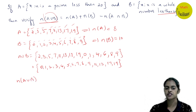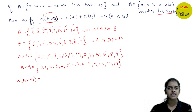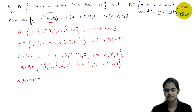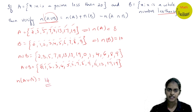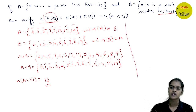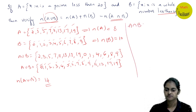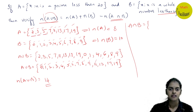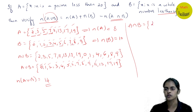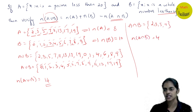A union B lists all elements: {0, 1, 2, 3, 4, 5, 6, 7, 8, 9, 11, 13, 17, 19}, so n(A ∪ B) = 14. A intersection B — common elements are 2, 3, 5, 7 — so A ∩ B = {2, 3, 5, 7} and n(A ∩ B) = 4.